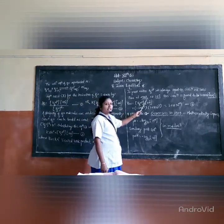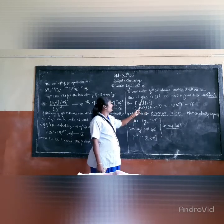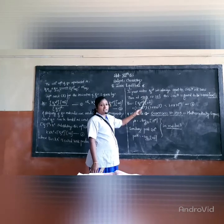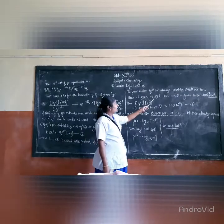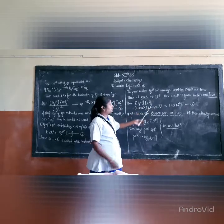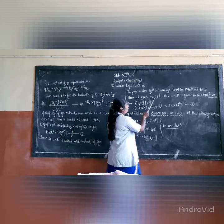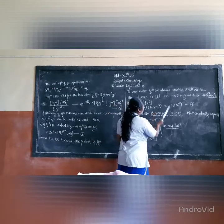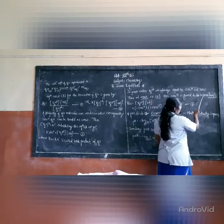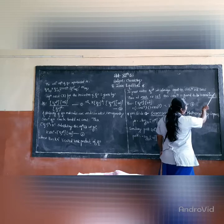Thus, at 298 Kelvin, or 25 degrees Celsius, this concentration is found to be 1.0 × 10⁻⁷ mole per liter for both H3O⁺ and OH⁻ ions.